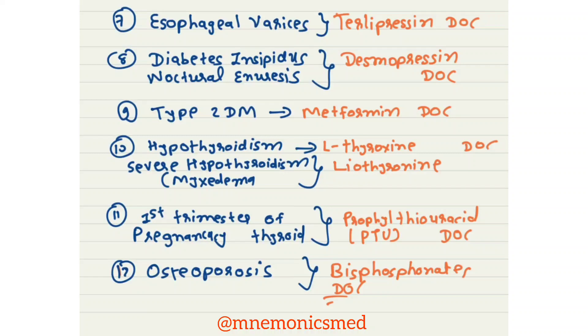Drug of choice for esophageal varices is Terlipressin. Drug of choice for diabetes insipidus and nocturnal enuresis is Desmopressin.